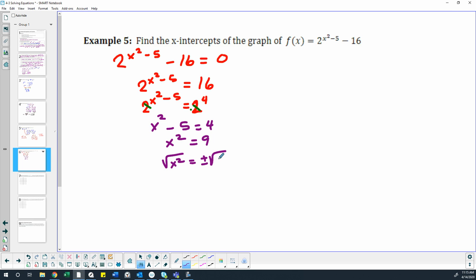Any time you throw a square root into a problem like this, you have to consider that there's a positive and negative answer. The answers would be positive or negative 3. Since this was finding the x-intercepts, that means we have an x-intercept at 3 comma 0 and an x-intercept at negative 3 comma 0.